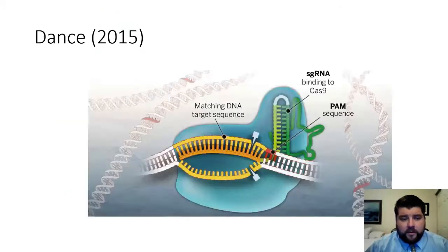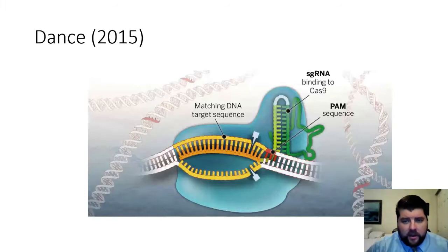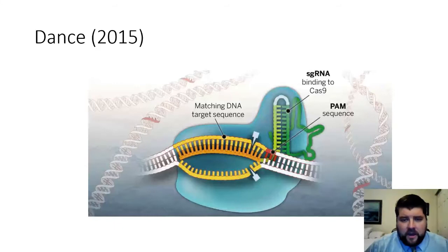Here is an example of a Cas9 protein. The interspaced palindromic repeats would bind onto the Cas9 protein on a specific site, after the DNA sequence is broken open. The matching DNA sequence would go onto the RNA on the Cas9, and these little parts would break apart or cleave the sugar phosphate backbone on the DNA, allowing that portion to be cut out. This PAM sequence is very integral to the whole process.